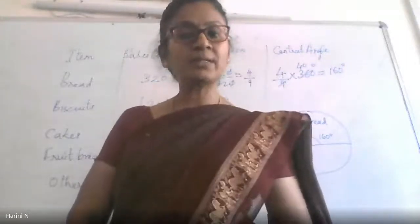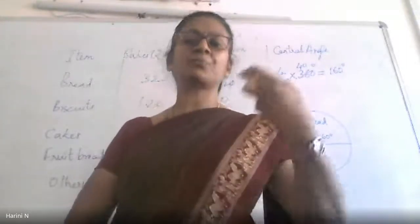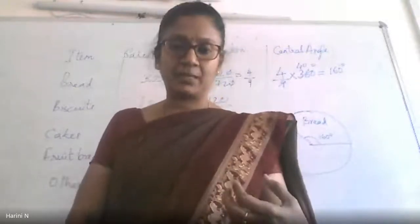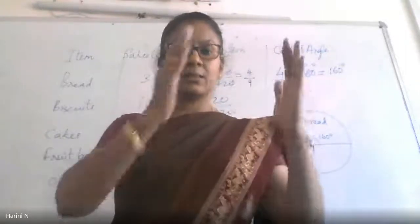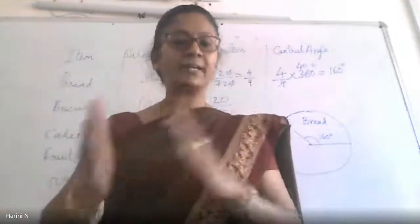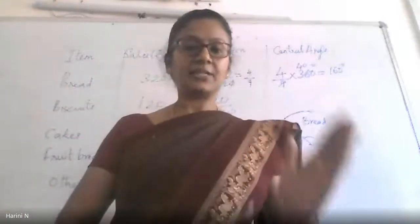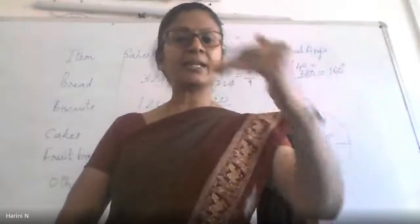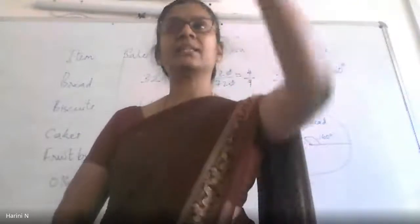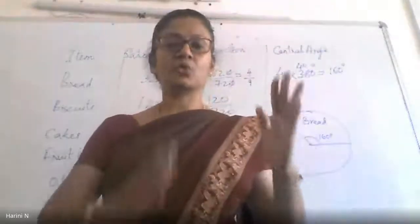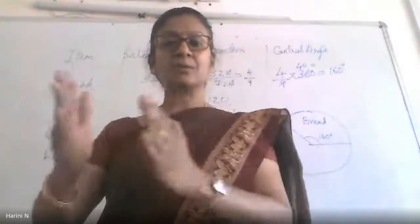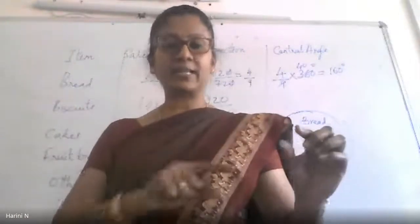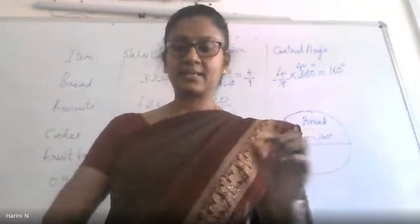When a grouped distribution has to be put in the form of a graph, what you get is a histogram — because the bars will not be separated; they will be continuous. For example, 0 to 10 may have 5 people and 10 to 20 may have 6 people, so the bars become attached because class intervals are continuously marked on the x-axis.